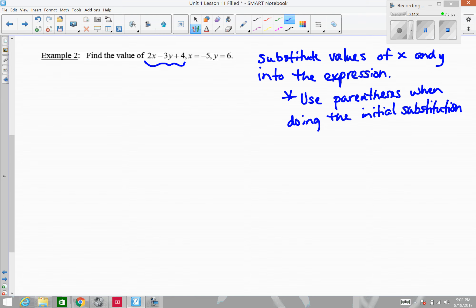Use parentheses when doing the initial substitution. So what I mean is, wherever we have x, we're going to substitute a negative 5, but we're going to put parentheses around it. And this goes in for x. Wherever we see y, we're going to put in a 6. I'm going to use parentheses at least initially when we do this substitution. So I'm going to rewrite the expression, 2, and then instead of x, I'm putting in my parentheses negative 5, the minus sign, the 3 instead of the y, 6 in parentheses, and then we have plus 4.